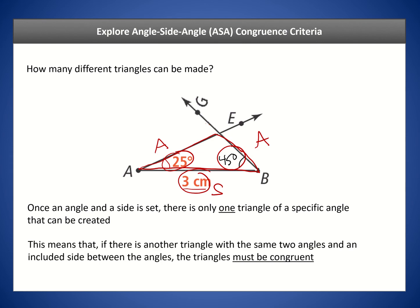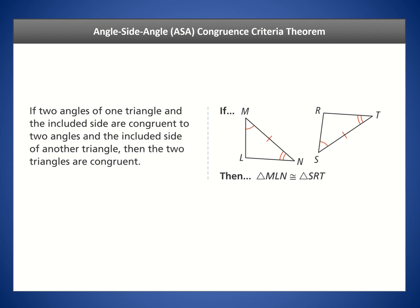This means if there's another triangle with the same two angles and an included side — where the included side is between the angles — then the triangles must be congruent. Let's make this official: the angle-side-angle congruence criteria theorem. If two angles of one triangle and the included side are congruent to two angles and the included side of another triangle, then the two triangles are congruent. We have angle M congruent to angle S, angle N congruent to angle T, and the included side MN congruent to TS. Therefore, the two triangles are congruent by this theorem.